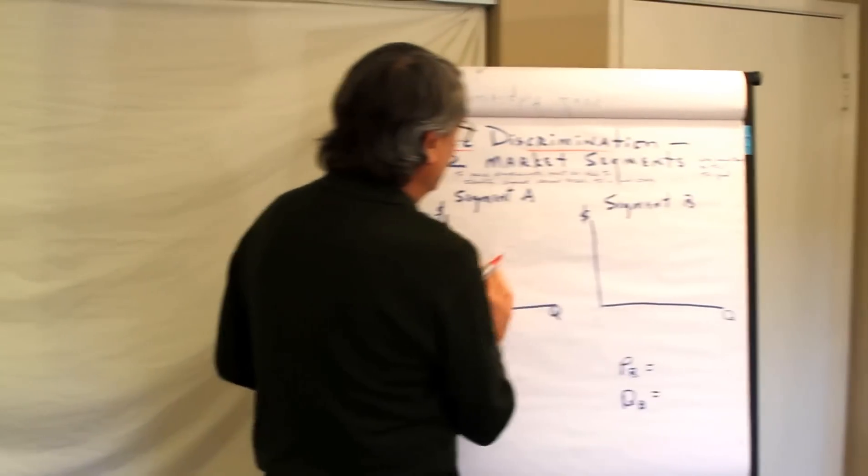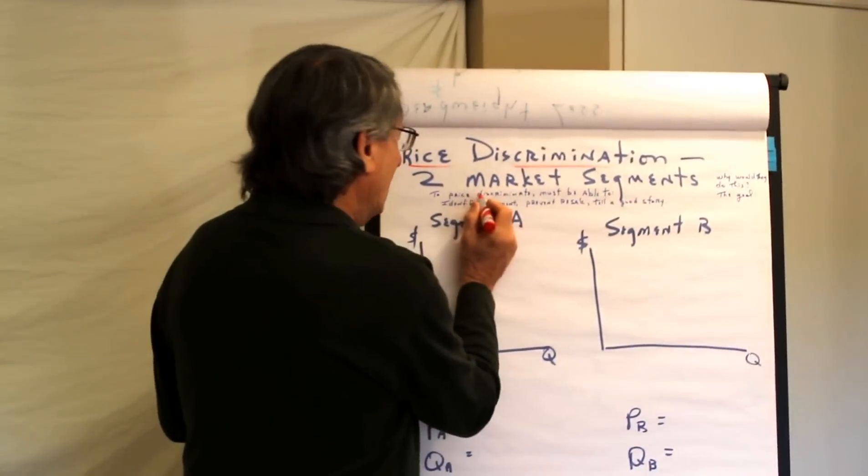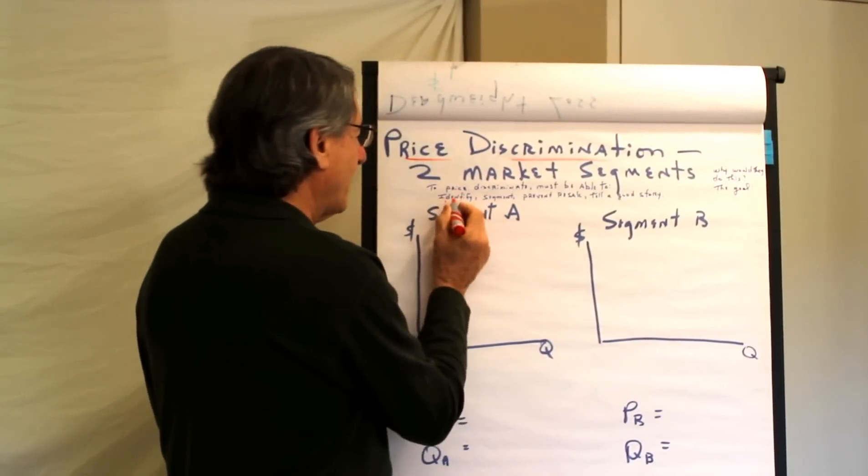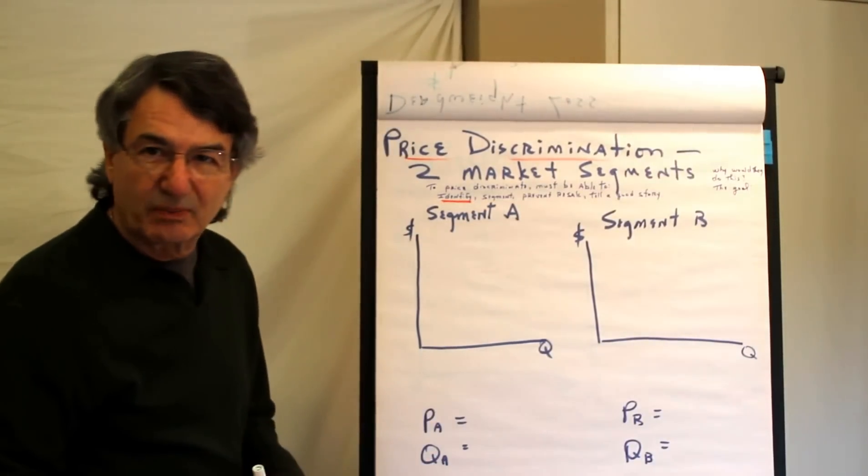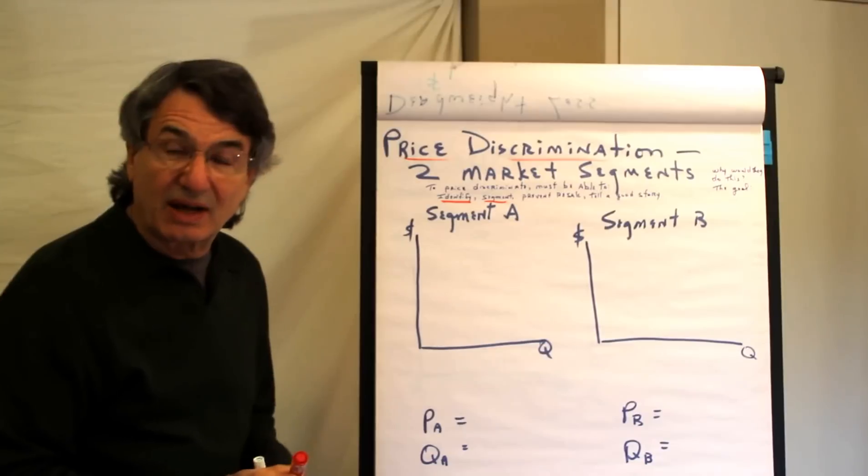Price discrimination. First of all, in order to price discriminate, a seller has to have some market power. Then, it must be able to identify different groups of people based on their elasticity of demand. It must be able to segregate them.